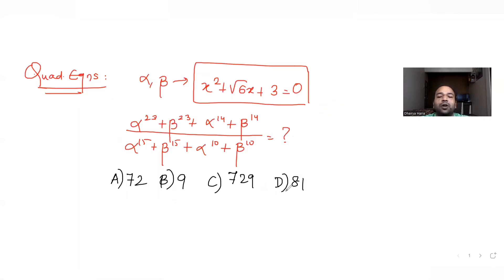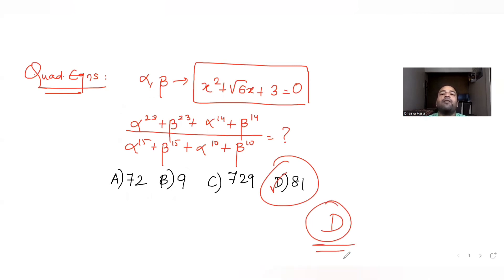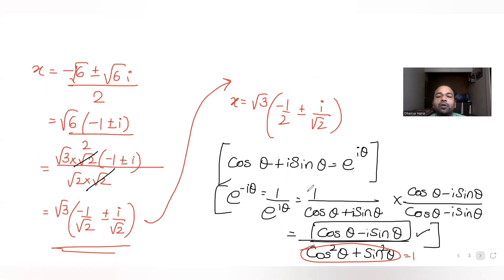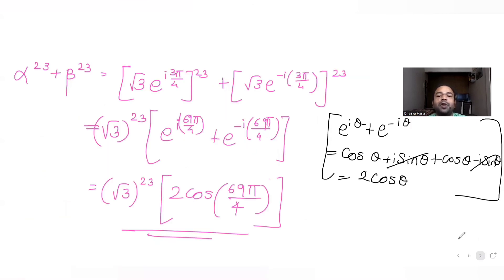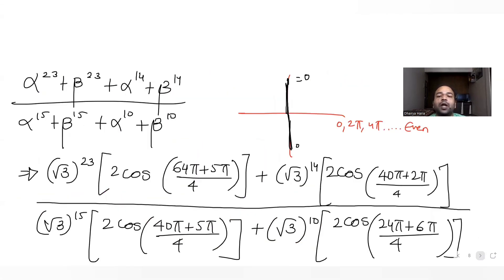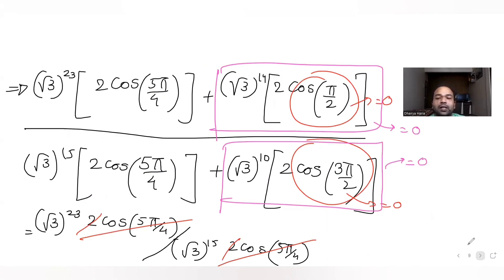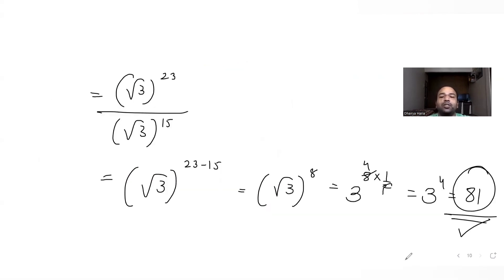The correct answer for the expression is 81, which matches option D. To summarize: we found the roots α and β, converted them to exponential form e^(±i·3π/4), substituted and simplified all four power expressions, and put them into the full expression, which simplified to give 81.